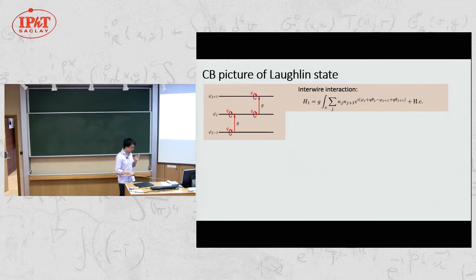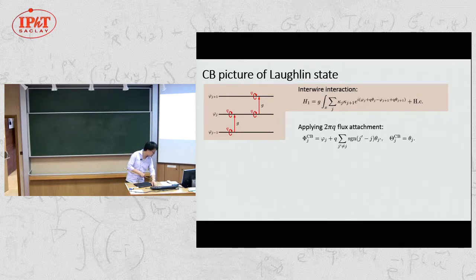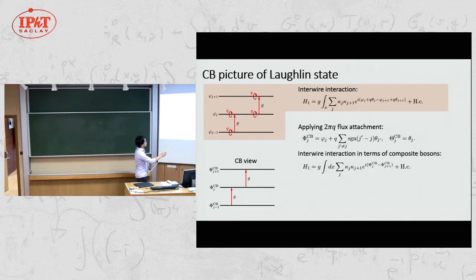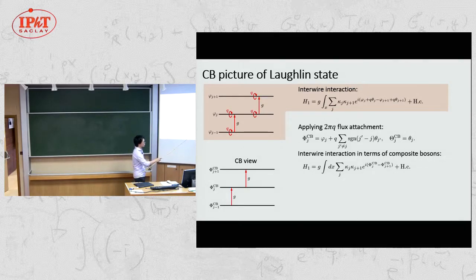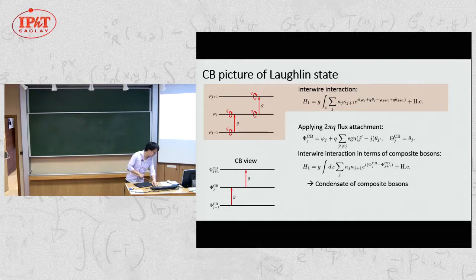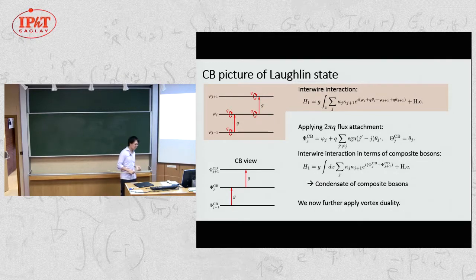For the composite boson picture of the Laughlin one-third state: apply 6π flux attachment. The interaction can be interpreted as a composite boson operator — simple composite boson hopping. You can make this condense, ending up with composite boson condensate. That establishes the composite boson picture of the Laughlin state. Then, applying vortex duality further, given by a non-local transformation to the composite boson field, the newly defined bosonic field corresponding to vortex doesn't directly couple to the electromagnetic field but instead couples to a fictitious dynamical gauge field α, exactly like the vortex duality in the continuum.